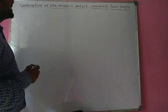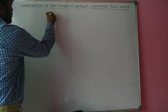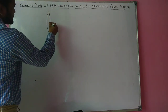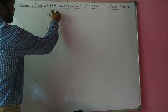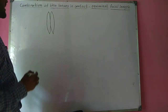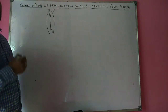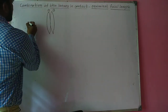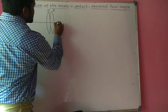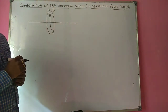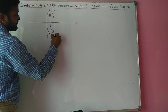Let us consider two thin convex lenses which are placed coaxially. These are the two thin convex lenses placed coaxially. Let us label the two lenses as A and B. A and B are the two lenses, and this is the common principal axis for the two lenses. The focal length of the two lenses, let us say F1 and F2. F1 is the focal length of lens A, F2 is the focal length of lens B.